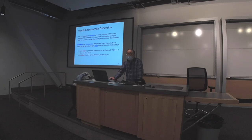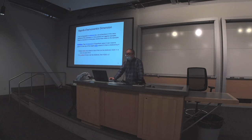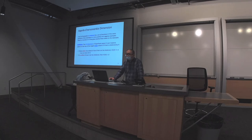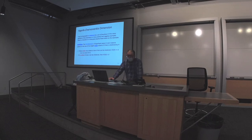So to claim the VC dimension is exactly three, you need to find three points that can be shattered by the hypothesis space, and show that any subset of four points cannot be shattered. The VC dimension provides a finite measure of the capacity of the hypothesis space, allowing us to derive sample complexity bounds even for infinite hypothesis spaces. Any questions regarding the definition of VC dimension? Let's stop here.